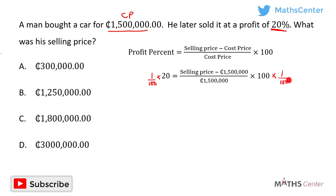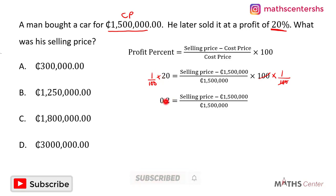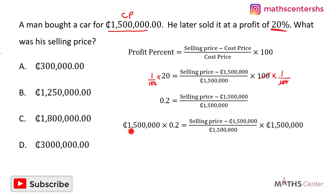The 100s cancel each other out. 1 divided by 100 times 20 gives us 0.2, so we have 0.2 equals the selling price minus 1.5 million, divided by 1.5 million. Then we multiply both sides by 1.5 million, and the 1.5 millions cancel out.